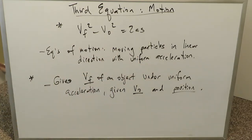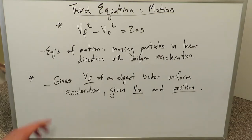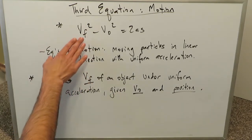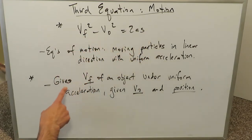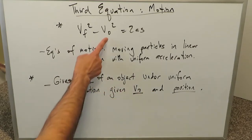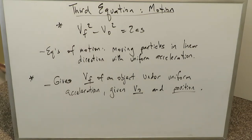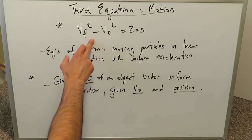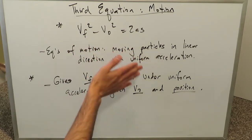This is not meant to be a physics video. It's meant to be more of an inspirational video, because I'll show you how this formula can be derived very easily using integral calculus. We will also derive it using algebra. These equations of motion describe moving particles in a straight line with uniform acceleration. The benefit of this equation is finding the final velocity given only the initial velocity and position — and you can see that the variable time is not found in this equation at all.